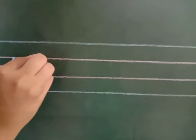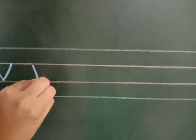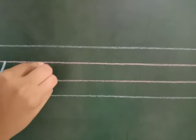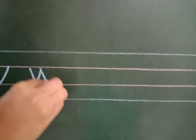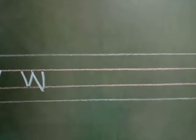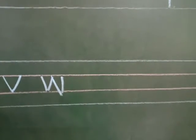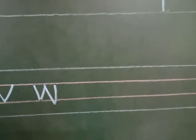Small w: slanting line, slanting line, slanting line, standing line. Small w. This is also written in the middle two lines — it's just like v and u.